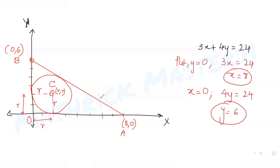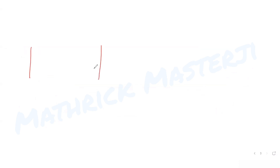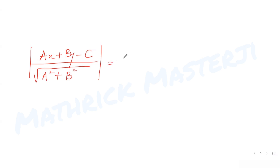The incircle also touches the line 3x + 4y - 24 = 0. Since this line is a tangent to the circle at one point, the radius is perpendicular to it. Using the formula for perpendicular distance from a point to a line — |ax + by + c| / √(a² + b²) — this distance equals r, the radius.